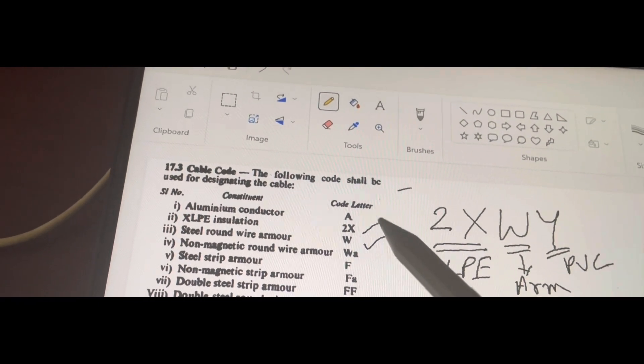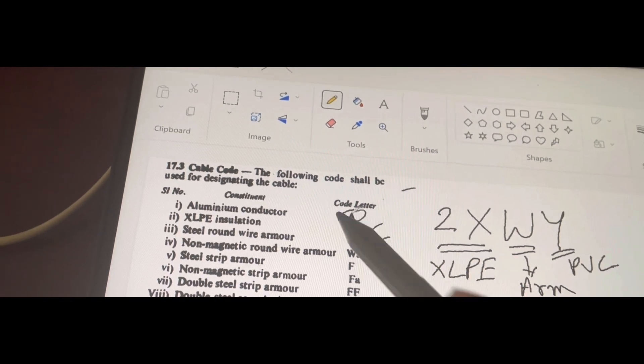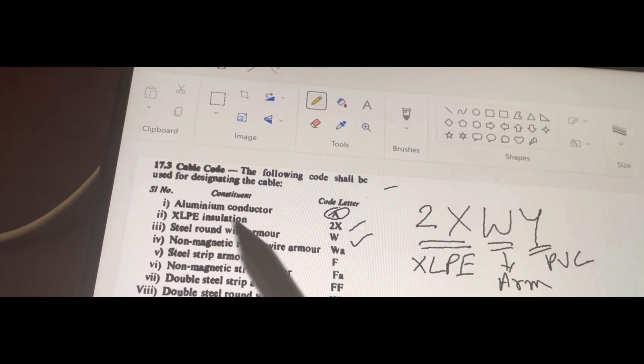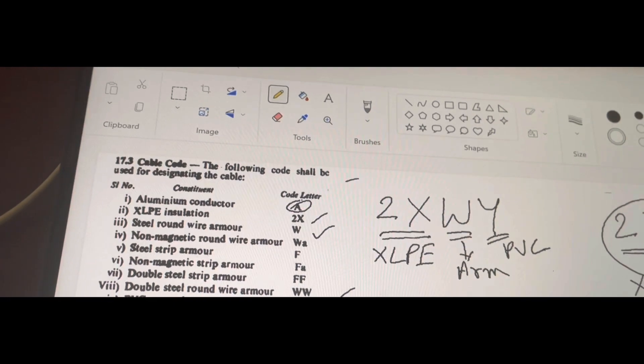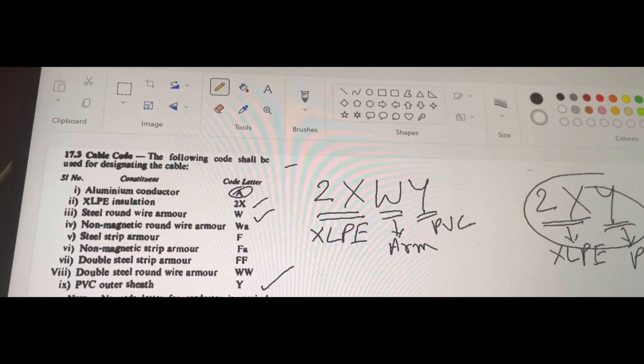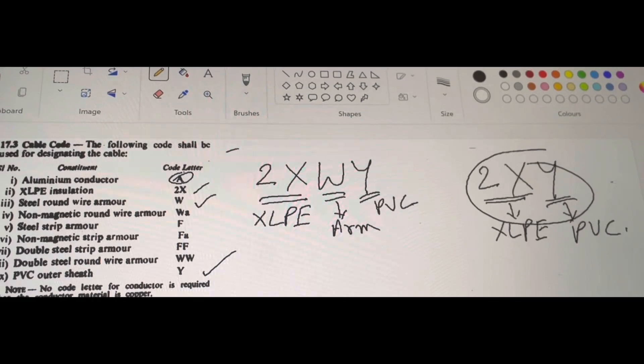And when you find a letter called a it is nothing but the conductor is made up of aluminum conductor. So, this is the way to interpret cable codes. Thanks a lot.